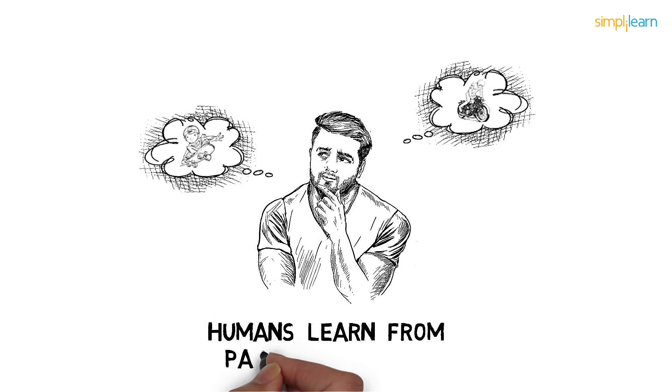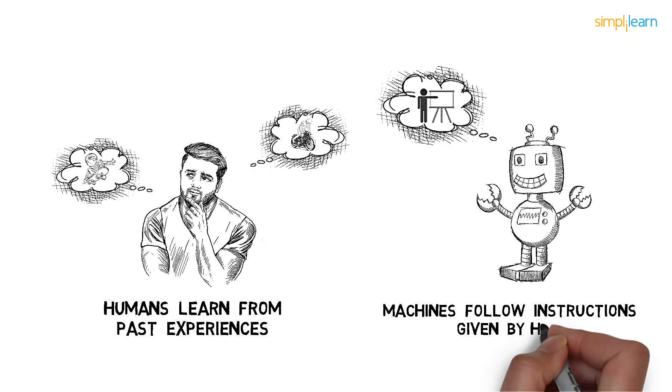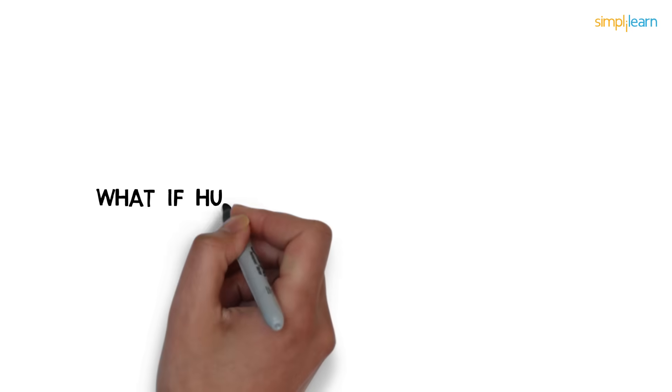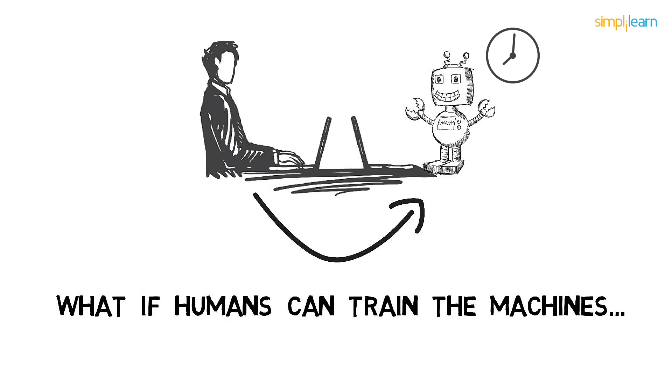We know humans learn from their past experiences and machines follow instructions given by humans. But what if humans can train the machines to learn from their past data and do what humans can do, and much faster? Well, that's called machine learning.